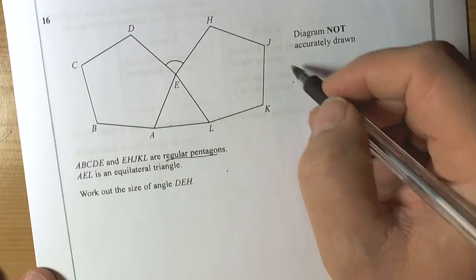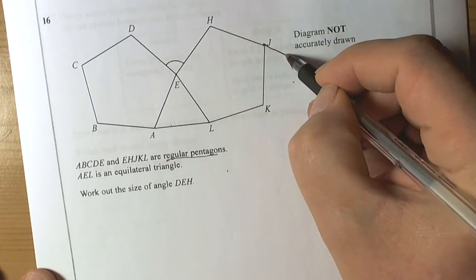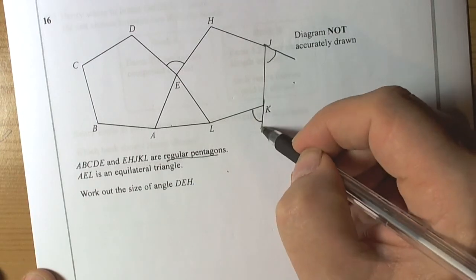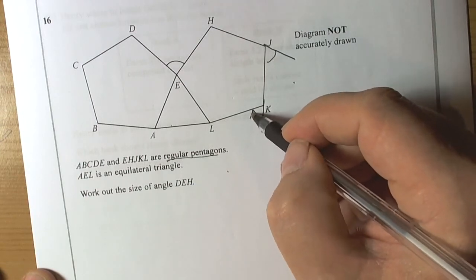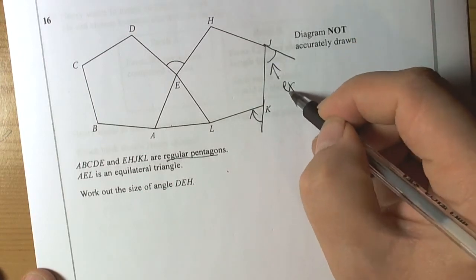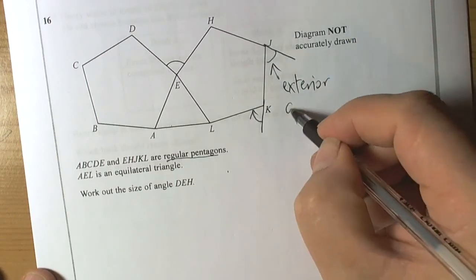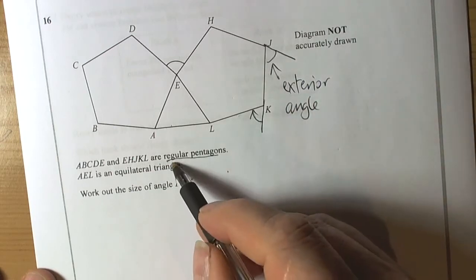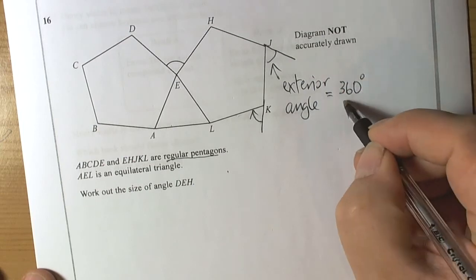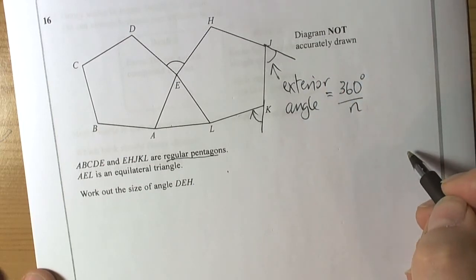The key thing about polygons to remember is exterior angles. The exterior angle is the angle that's created by extending the side. We should remember that the exterior angle of a regular polygon, regular means everything is the same, so this rule only works for regular polygons, is 360 degrees divided by the number of sides.